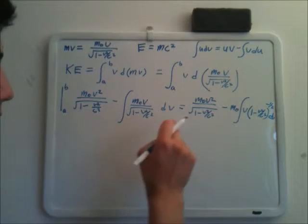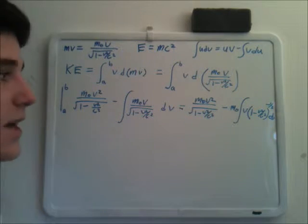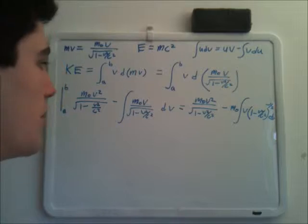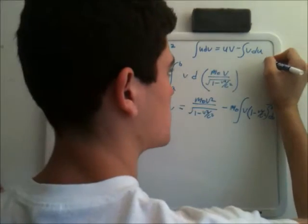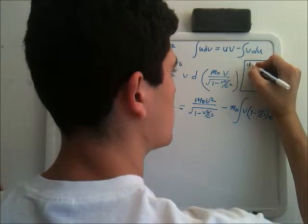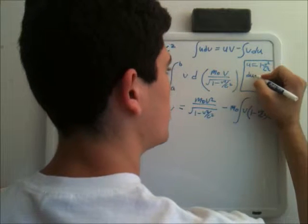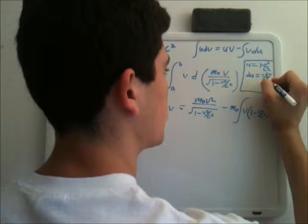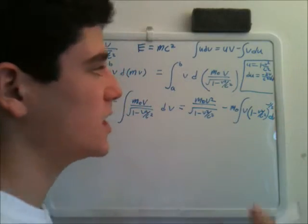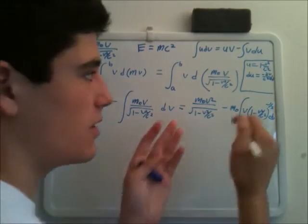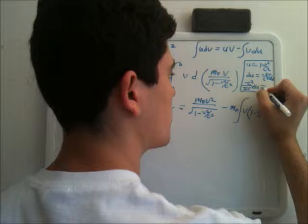Because 1 over the square root of 1 minus v squared over c squared is just (1 minus v squared over c squared) to the negative one-half. Now we're going to do a u-substitution. We say u equals 1 minus v squared over c squared, and du equals negative 2v over c squared dv. Rearranging, we get dv equals negative c squared over 2v du.